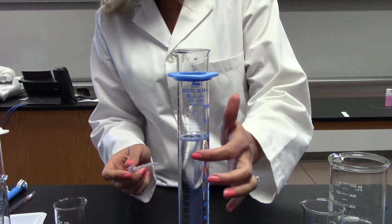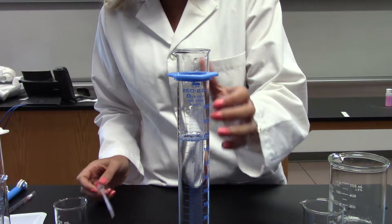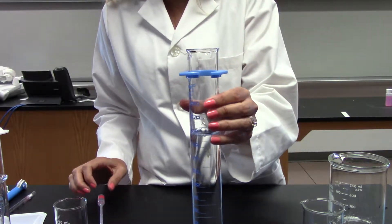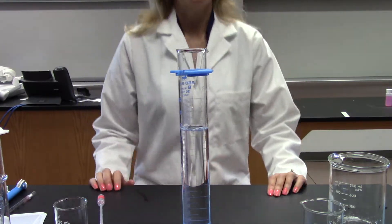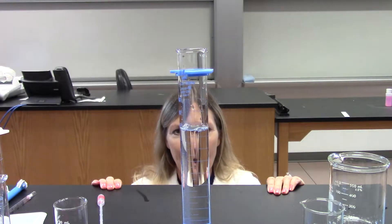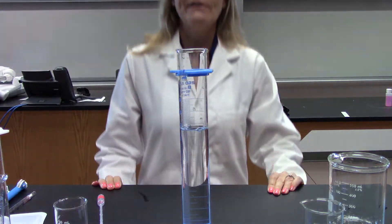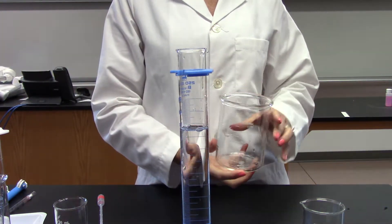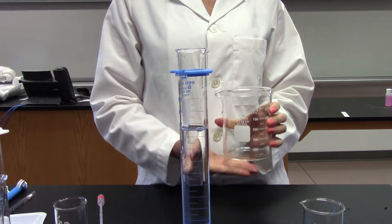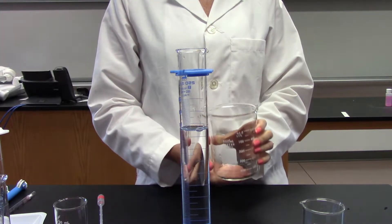But it also has more graduations. So if I look at this at eye level and look at the meniscus, which I'll explain in a minute, I'm actually at 198 milliliters. So I was off by two whole milliliters when I measured using my beaker. You would never want to use a beaker to measure liquid volume.